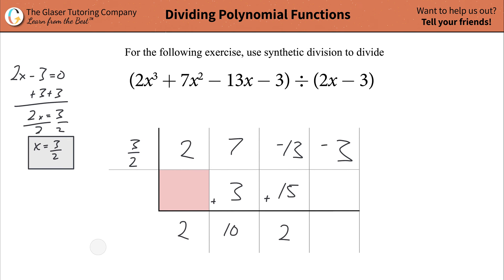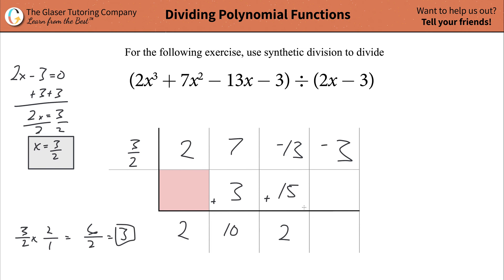Repeat the process again: take this number and multiply it by 3 over 2 — so 3 over 2 times 2 over 1 gives 6 over 2, and half of 6 is 3. Plug it in and add: negative 3 and positive 3 is going to be 0. And now we're done with the synthetic division.